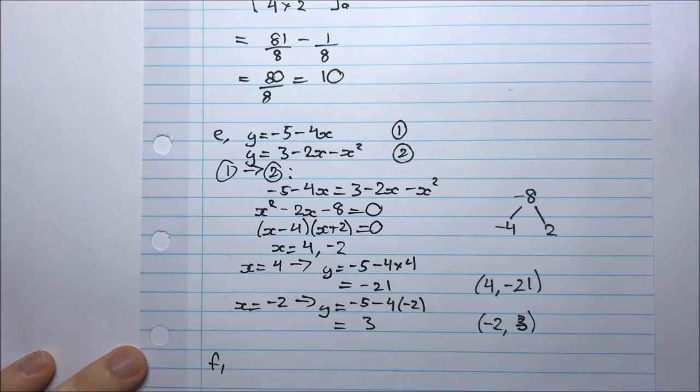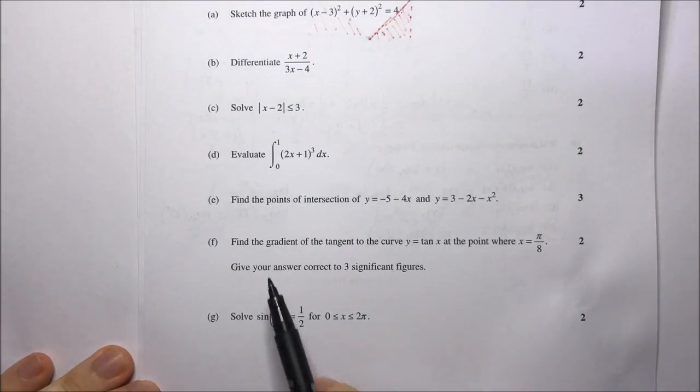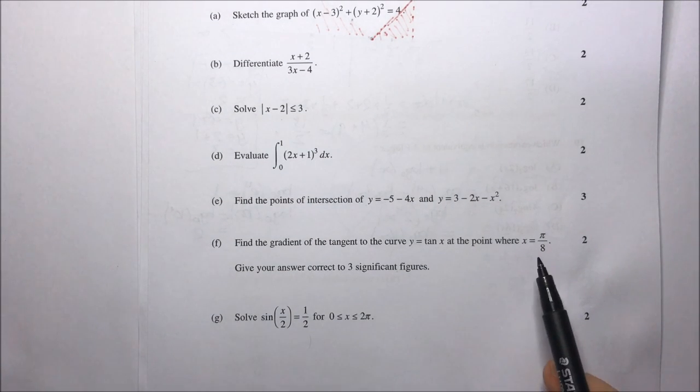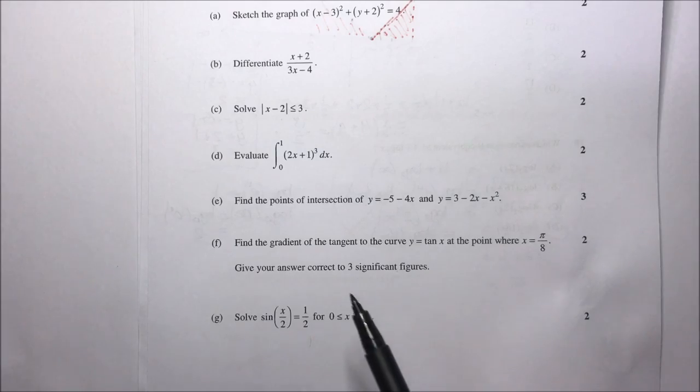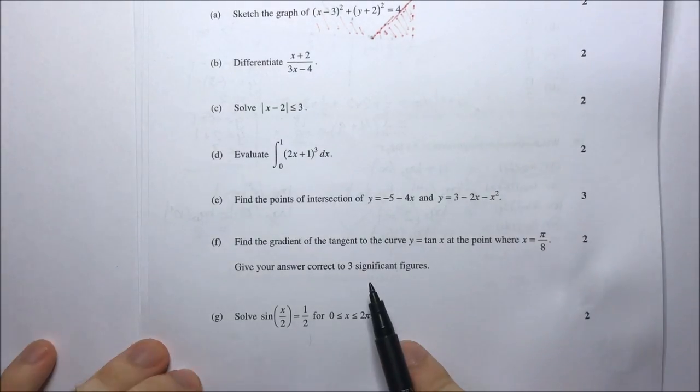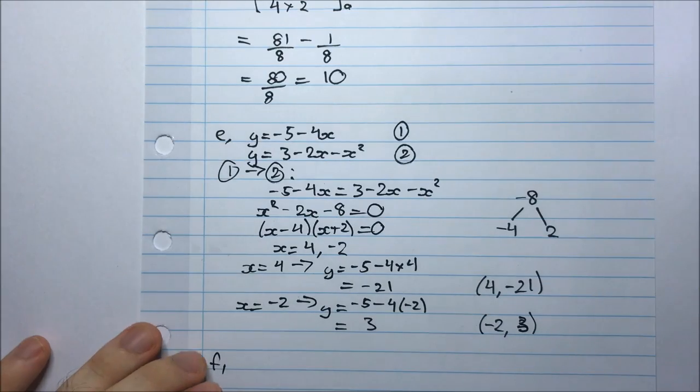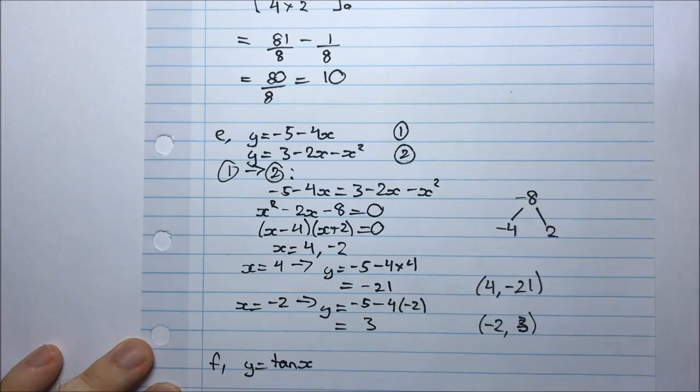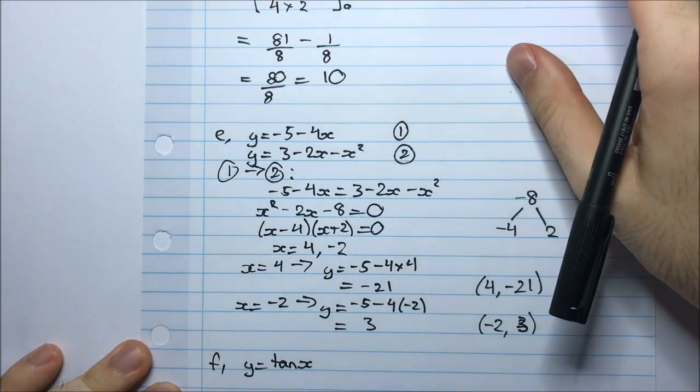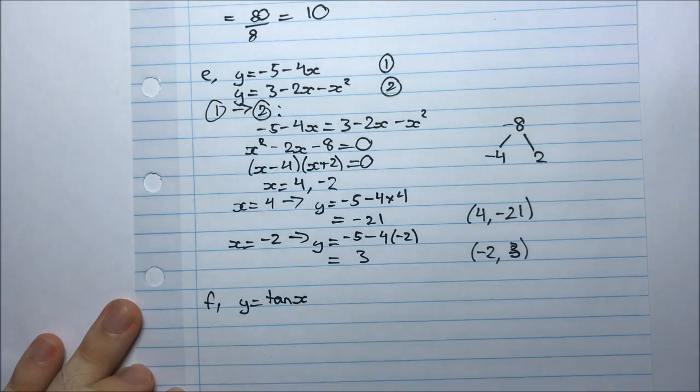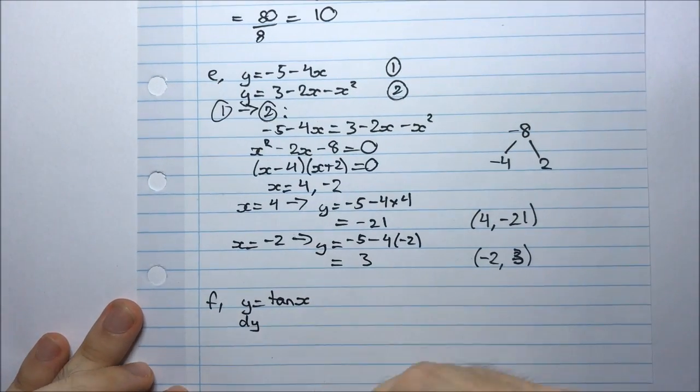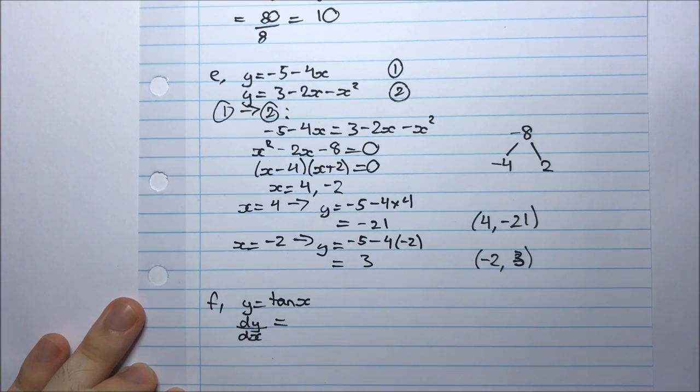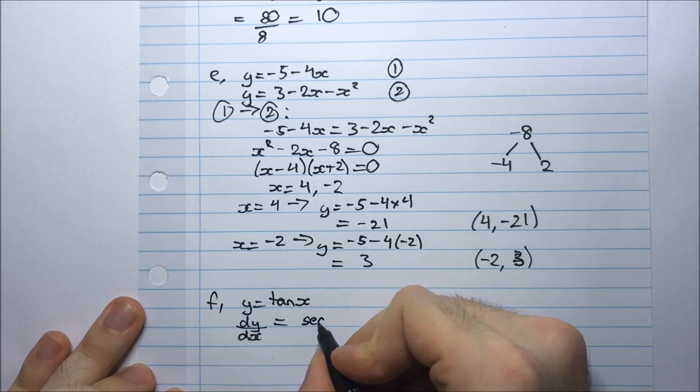The next part, F. Find the gradient of the tangent to the curve y = tan(x) at the point where x = π/8, and give your answer correct to three significant figures. So I'm finding the gradient to the curve y = tan(x). When I have a function and I want to work out a gradient at a particular point, I need to differentiate. So dy/dx equals the derivative of tan(x) is sec²(x).